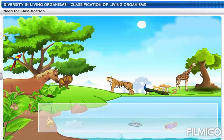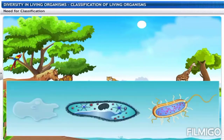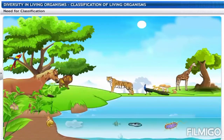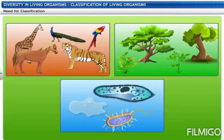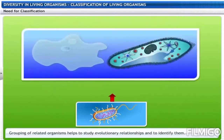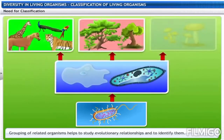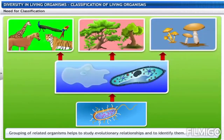Organisms differ in form, structure, mode of nutrition and their type of living, so they need to be grouped according to their similarities. This grouping of related organisms helps us to study evolutionary relationships and identify them properly.